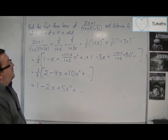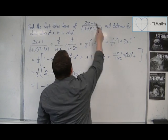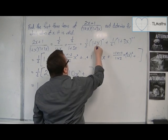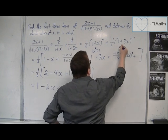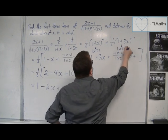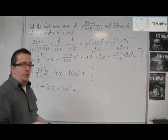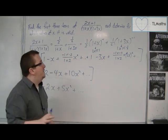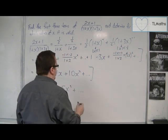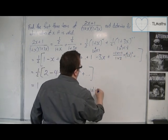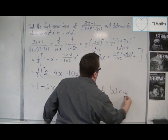And we can determine for which values of x it is valid. Because this bracket here will be valid for mod x is less than 1. And this one will be valid for mod x is less than 1 third. And so the whole thing, in order for the whole thing to be valid, we must take the smaller of the two, because it's where the two overlap. And so it's valid for mod x is less than 1 third.